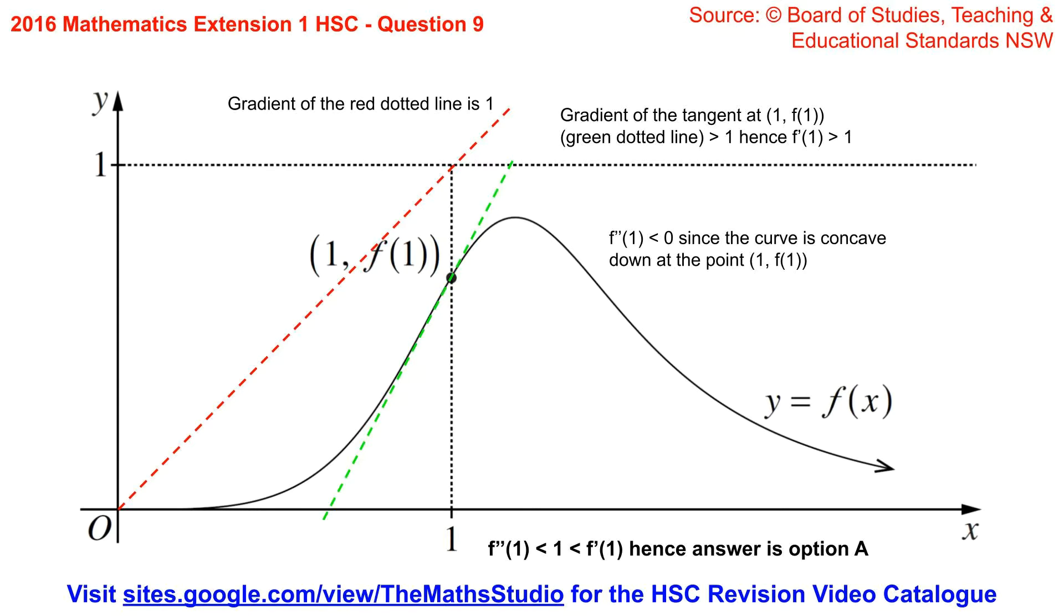Now the gradient of the tangent at the point (1, f(1)), which is the green dotted line, is greater than 1. Hence f'(1) is greater than 1.